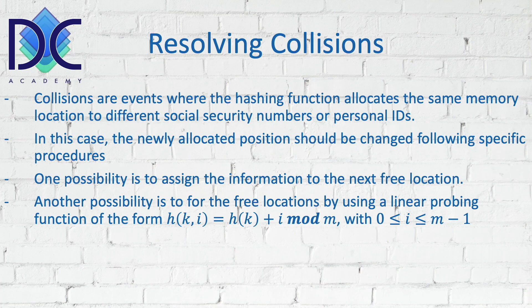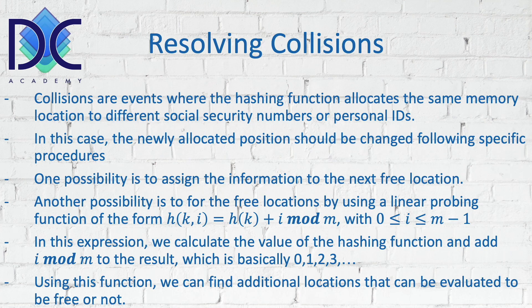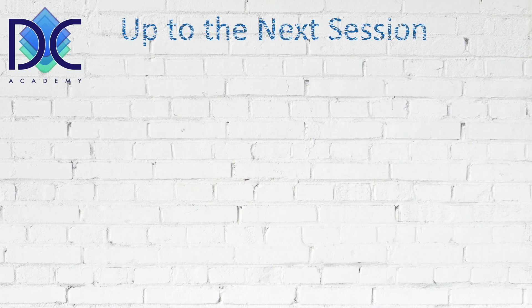The linear probing function has the form H(k, i) = (H(k) + i) mod m, where i is between 0 and m−1 inclusive. When i equals zero, there is no problem — we put the number there. Otherwise, we can go to i = 1, 2, 3, 4, 5, adding more spaces to that location. We calculate the value of the hashing function plus i, mod m, giving positions 0, 1, 2, 3 up to m−1. For each candidate location, we evaluate whether it is free, and continue until we find a free location.